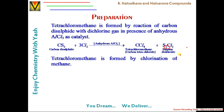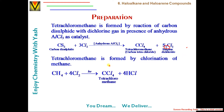Tetrachloromethane is also formed by chlorination of methane. Methane reacts directly with chlorine gas in the presence of ultraviolet radiation — absorbing photon energy through a free radical mechanism — to give carbon tetrachloride.